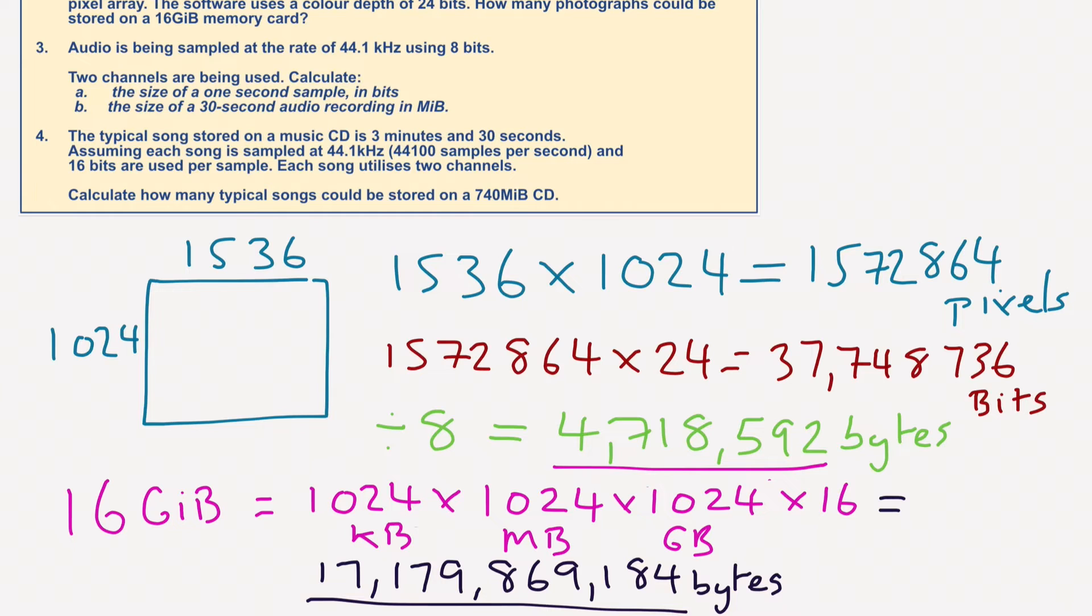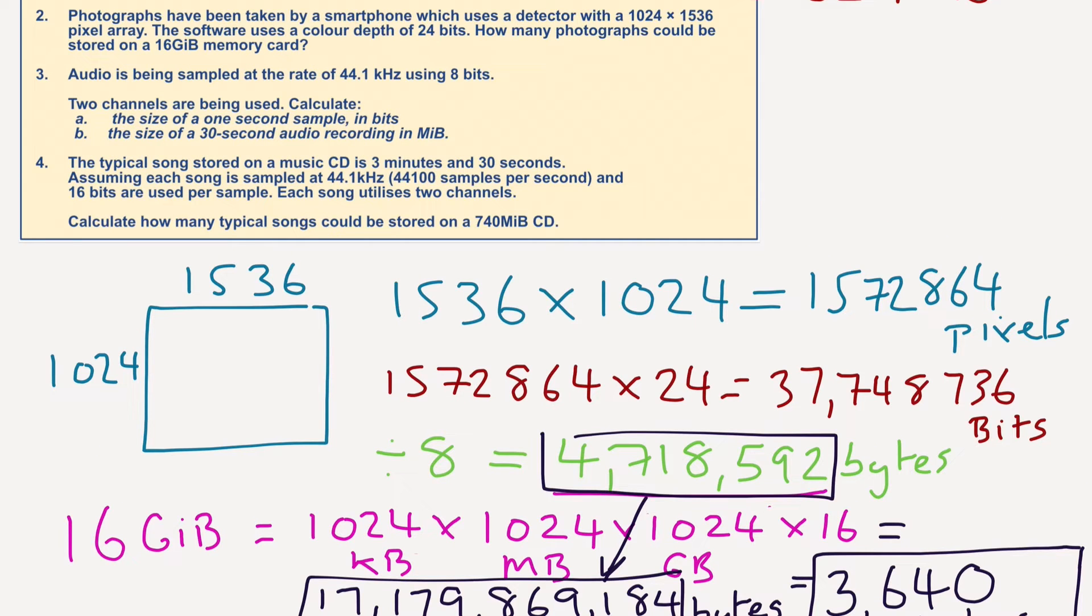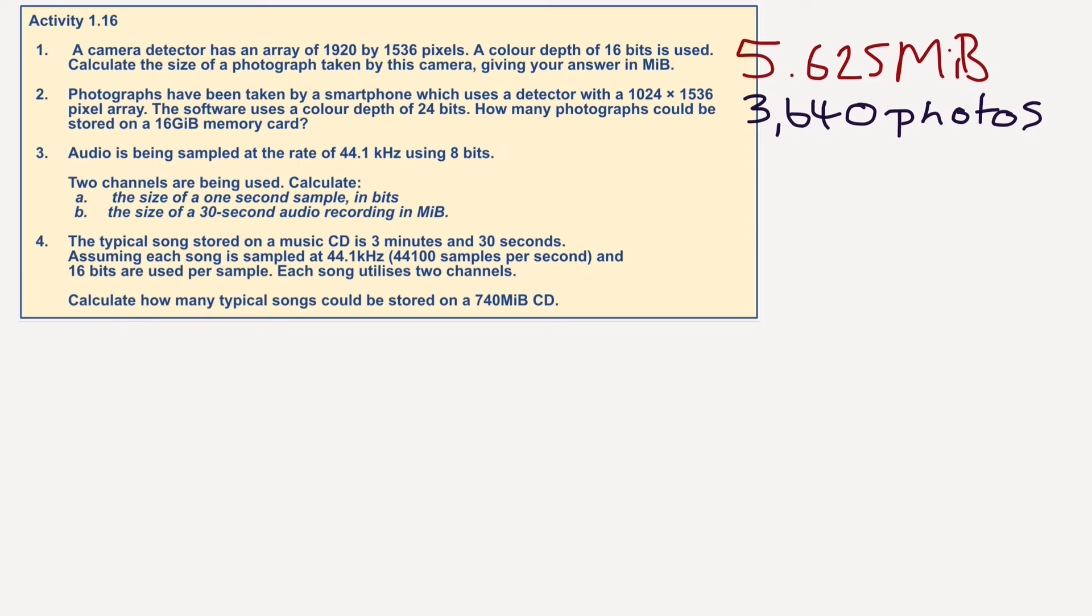We need to see how many times this goes into this. We could get a grand total of 3,640 images, photos on our camera. It's actually 3,640.888 recurring, but of course we can't have 0.8 of a photo. So that answer is 3,640 photos.